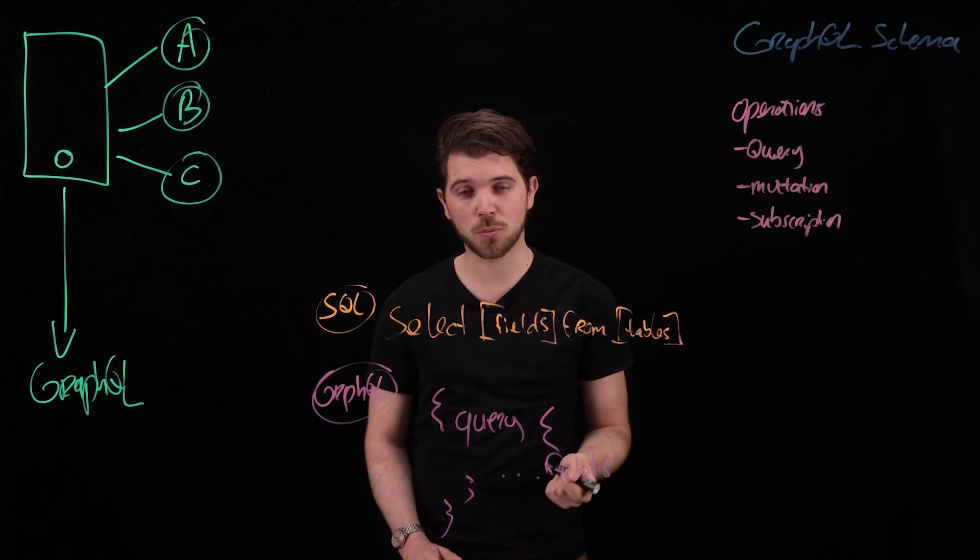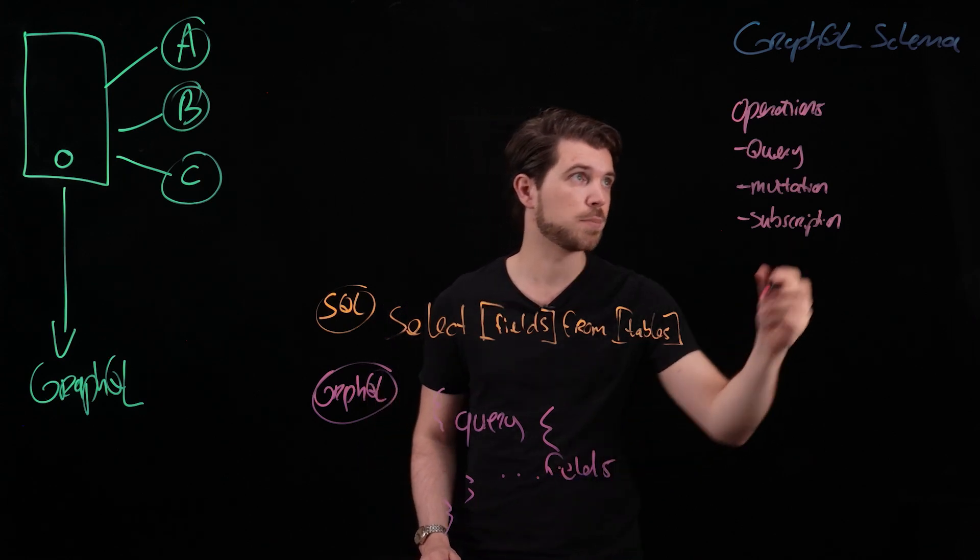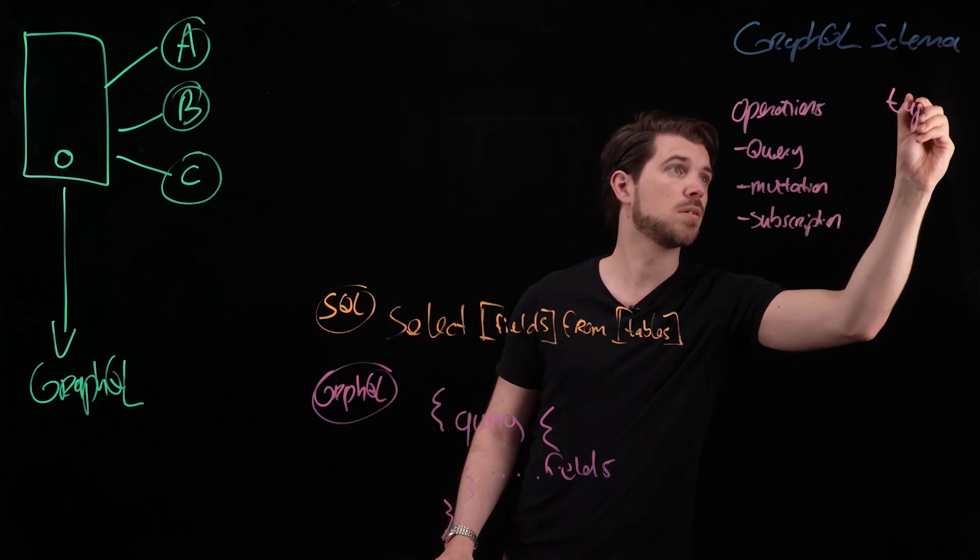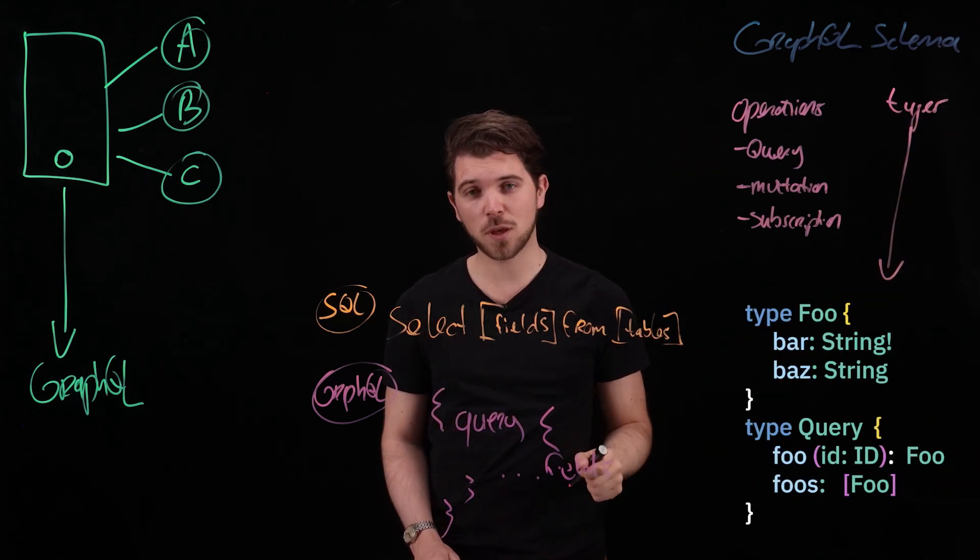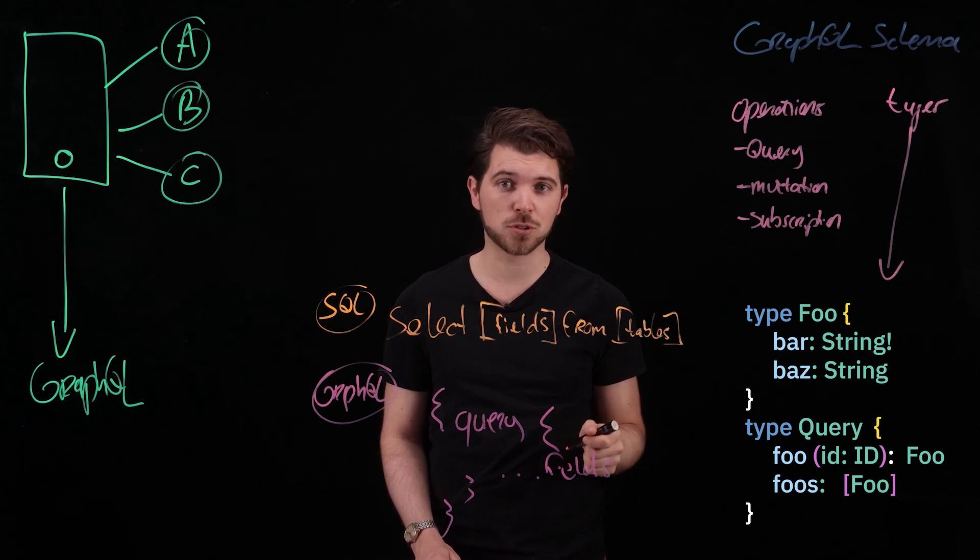The response for all these operations are defined in your types. These types will have type definitions for all the fields that are available in your schema.